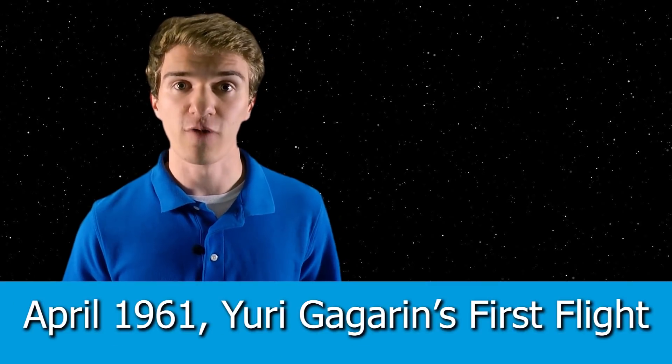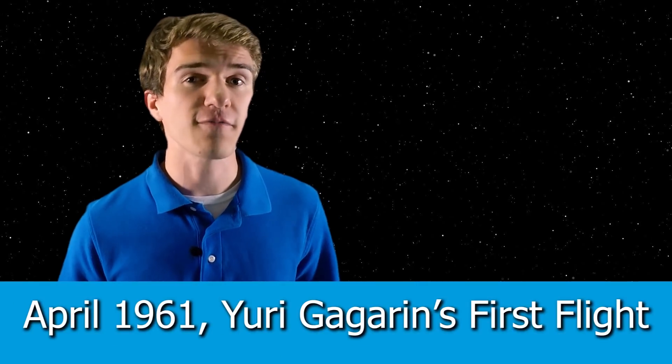However, just a few weeks after declining this in April of 1961, Yuri Gagarin, a Russian cosmonaut, became the very first person to not only get to space but also orbit the Earth. And after this event, this drastically changed John F. Kennedy's opinion on the space program.